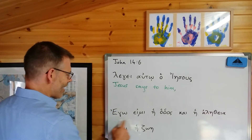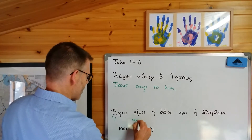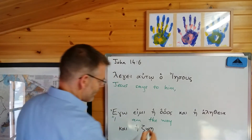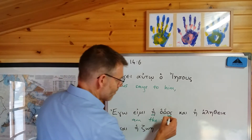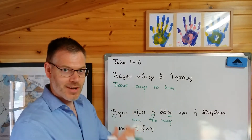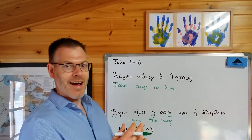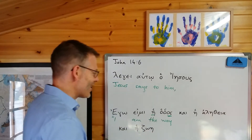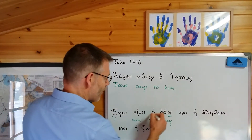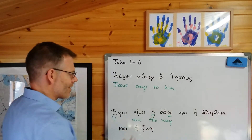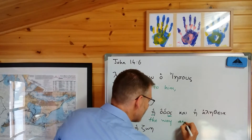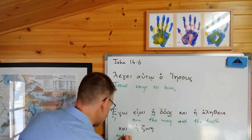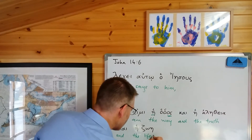Quotation marks — ego eimi, 'I am,' hē hodos, 'the way' — notice, a feminine noun with a feminine article, but it looks masculine. Hodos, erēmos, Aiguptos: three feminine nouns that look masculine. 'The way' — and then kai hē alētheia kai hē zōē — 'and the truth, and the life.' Close quotes. This is nominative because it's eimi, so it takes a complement in the nominative, not an object in the accusative.